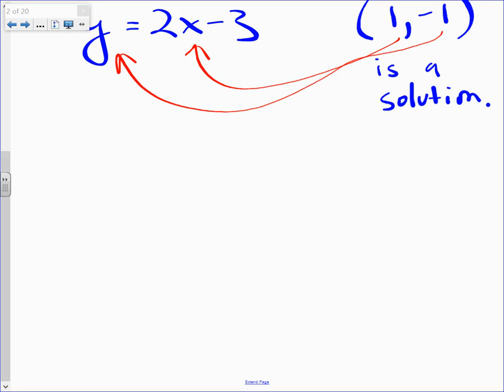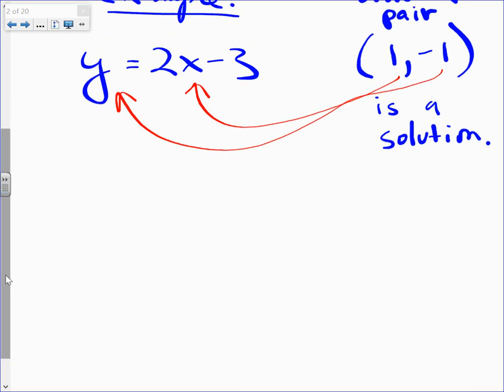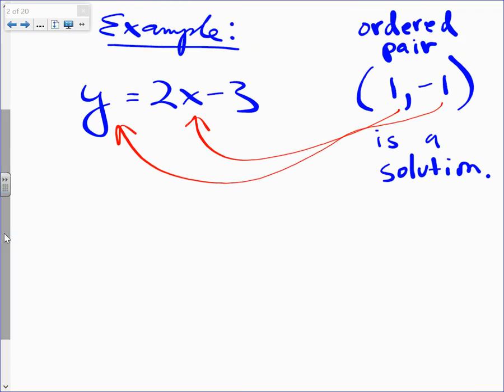Watch, Castro. Watch this. Wherever I see y, I'm going to replace it with negative 1. Wherever I see x, I'll replace it with positive 1. Watch this. Two times, instead of x, 1 minus 3. This better be true. This better satisfy, or else the ordered pair is not a solution. Let's see, though. Let's keep simplifying and making, and let's verify that the left and right side are the same.